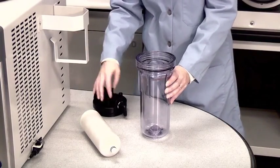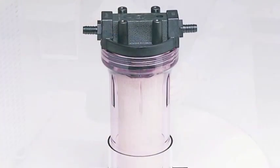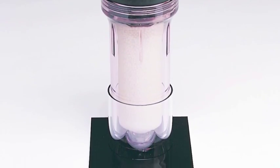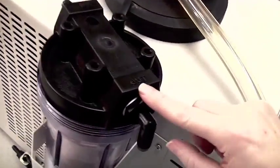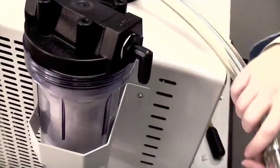Install the secondary insert into the canister and place it in the cold trap bracket. Attach the hose from the cold trap to the out connector of the canister housing.